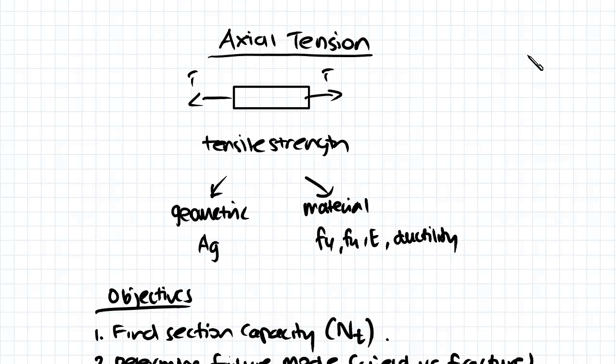Tensile strength in design is assessed in two factors: geometric properties as well as material properties. Under geometric properties we're most concerned with the gross area, and under materials property we're mostly concerned with the yield stress, the fracture stress, the Young's modulus as well as the ductility.